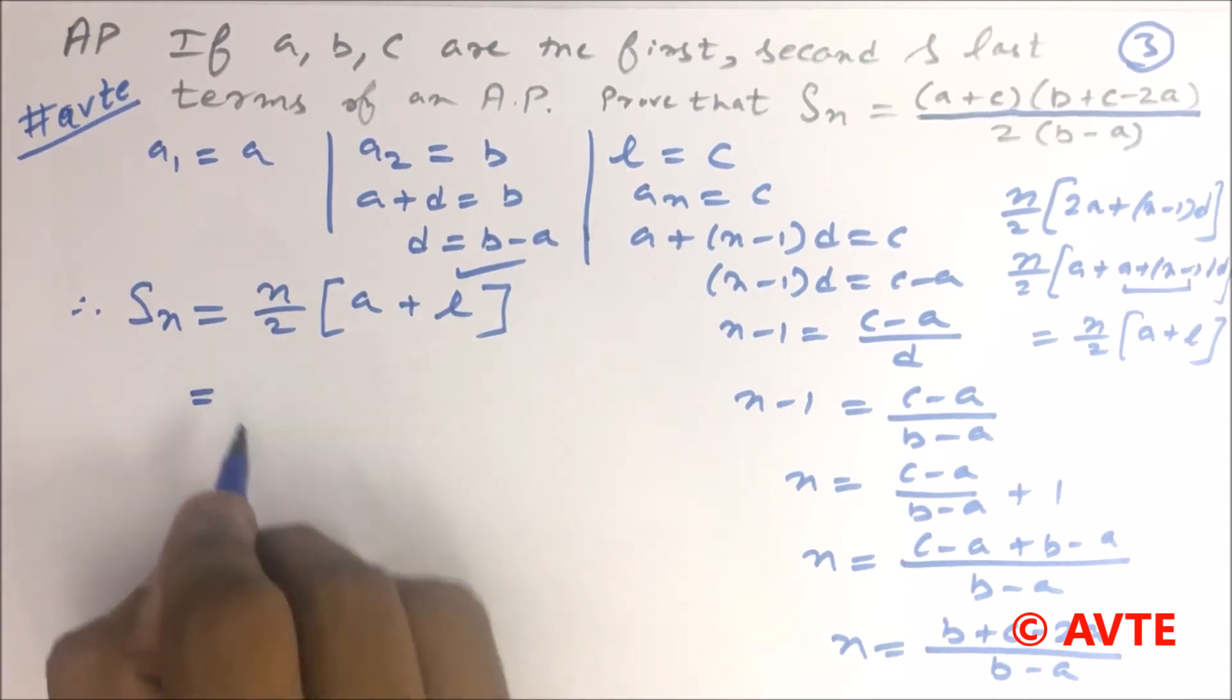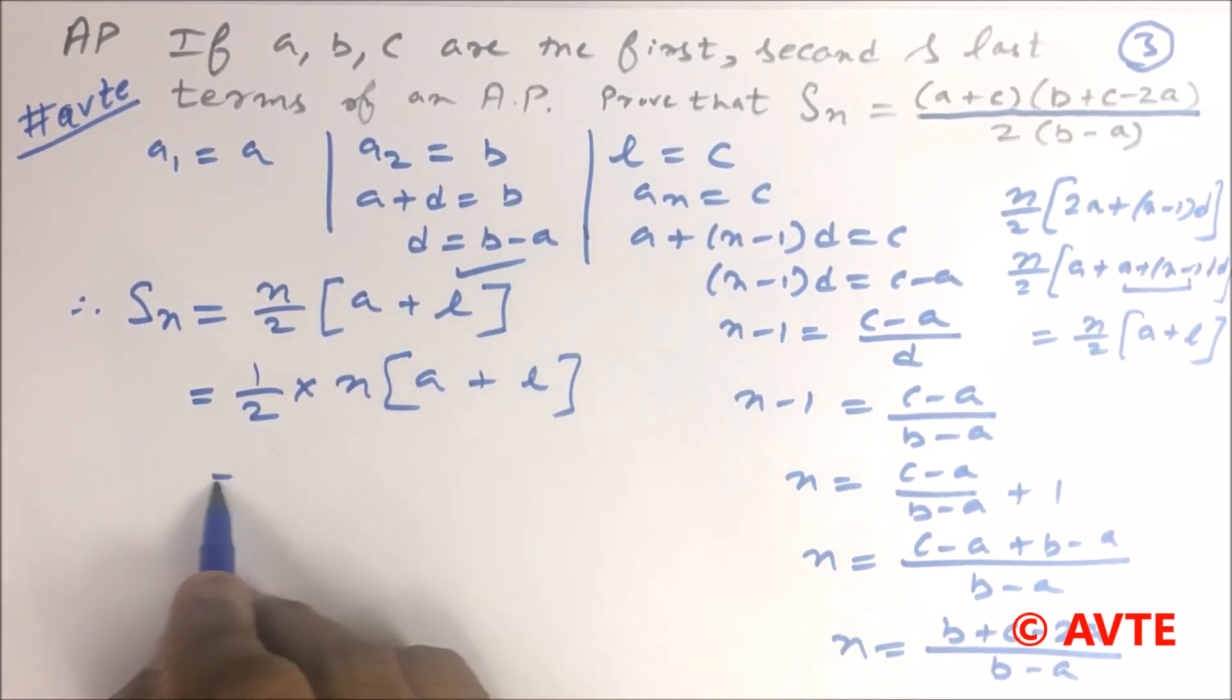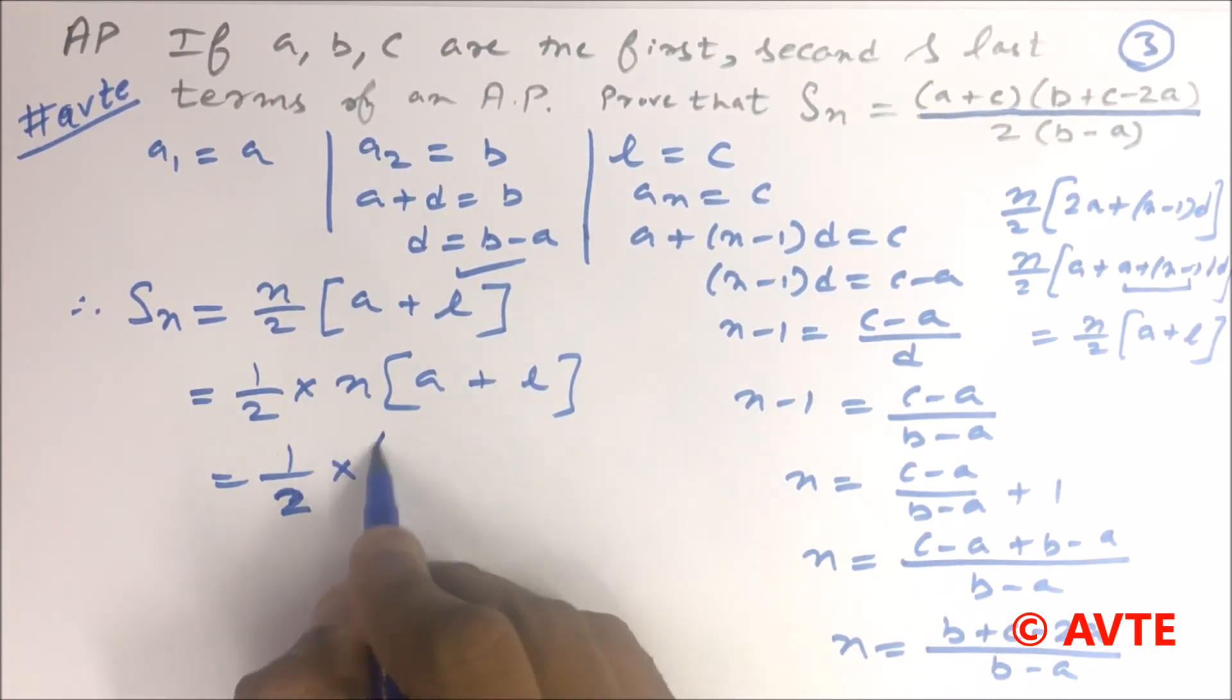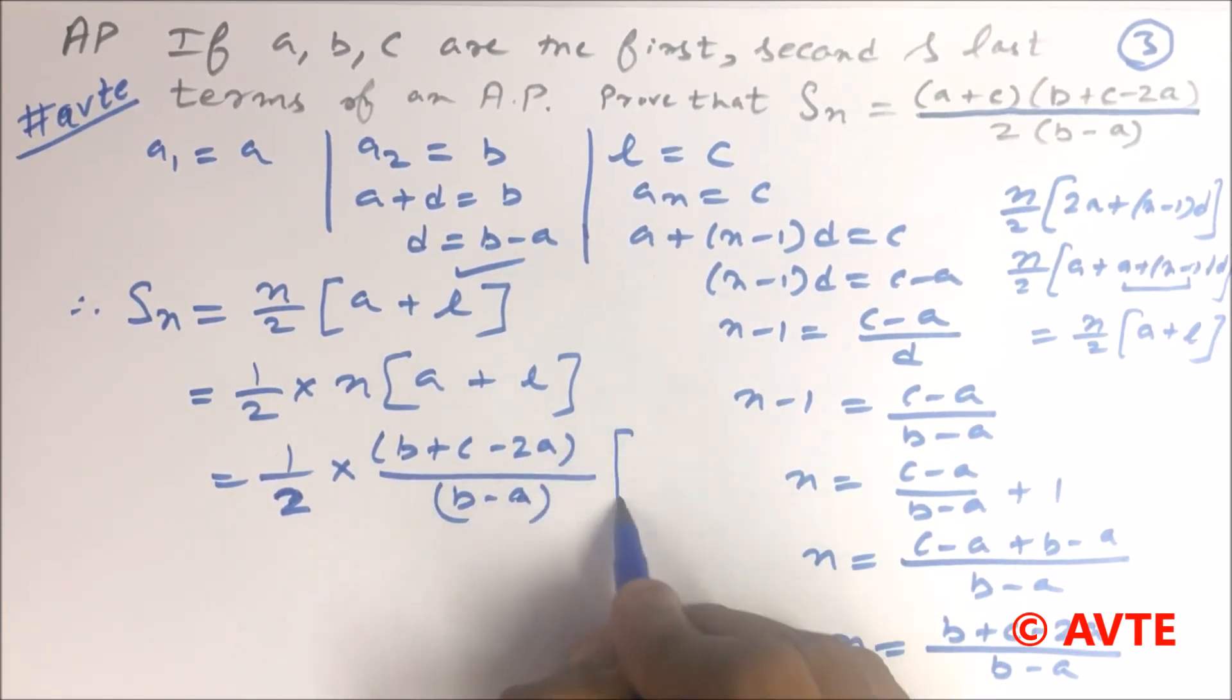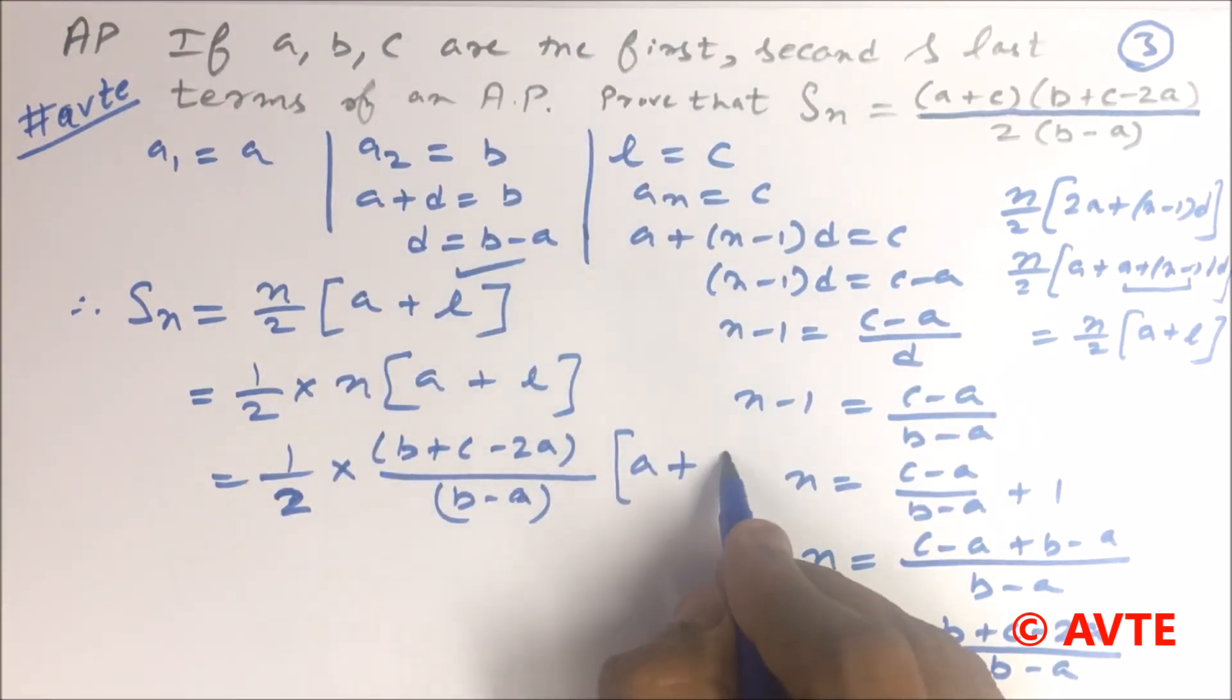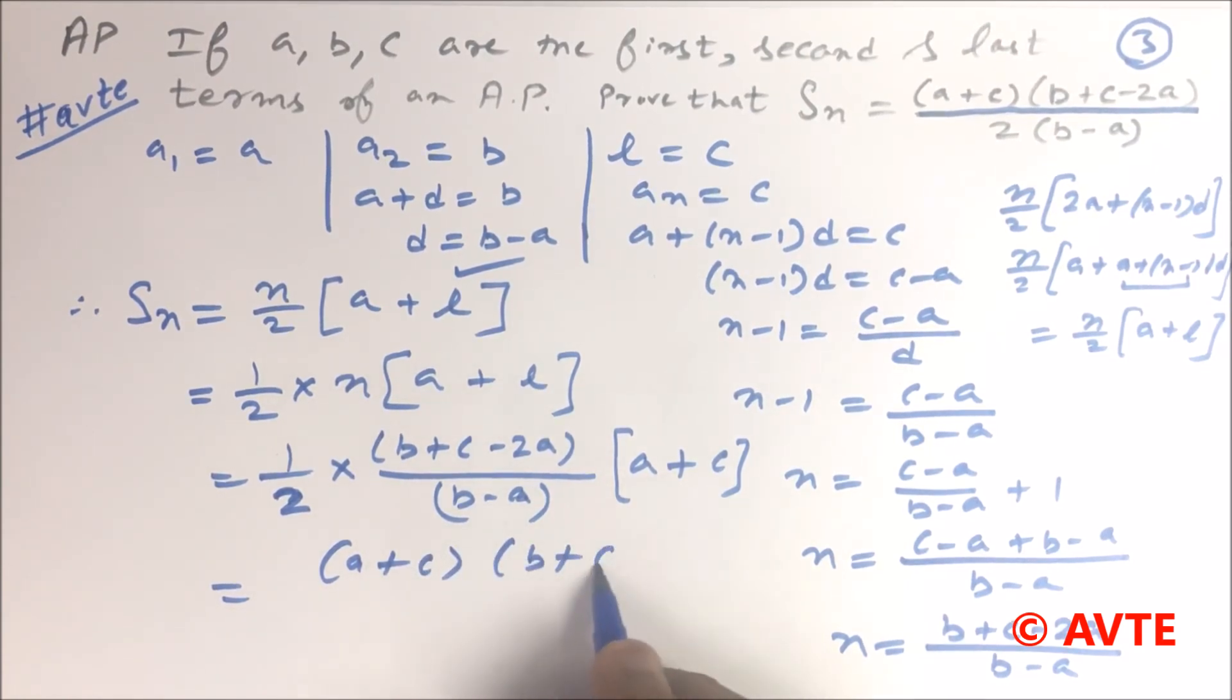So now we have the value N by 2. It is 1 by 2 times N. The value of N is (B plus C minus 2A) upon (B minus A), and the value of A is A and the value of L is C. So we can write down (A plus C) in bracket, times (B plus C minus 2A) upon (2B minus A).